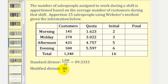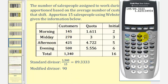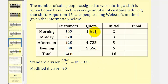Let's begin by changing the divisor to 90 and see what that does for us. We recalculate our quotas by dividing the number of customers over each shift by 90. For the morning shift, we would have 145 divided by 90, giving us a quota of approximately 1.611. Notice for the mid-day shift, 270 divided by 90 would be exactly three. Let's go ahead and round these to the nearest whole number: this rounds to two, this stays at three, this rounds to five, this rounds to six. But notice how still this sum is 16 — it's too high. So again, we have to adjust the divisor and increase it more.